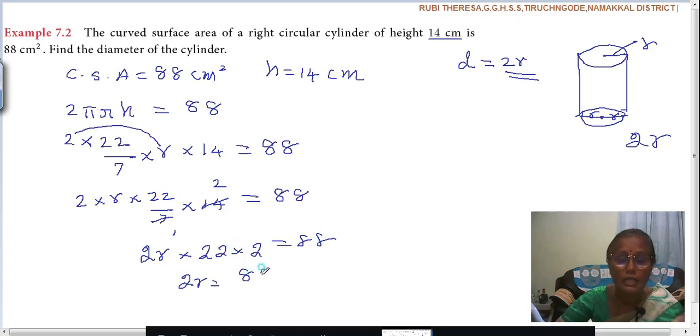You want to find out 2R. 2R equal to 88 divided by. No need to multiply it here. It is better to bring it to the down in the denominator because this is a multiplication in LHS. When you are bringing this to the RHS, how will you write? In the denominator. Reciprocal. 22 into 2 means what? Divided by 1, divided by 1. That means what? 1 by 22, then 1 by 2. But it is not necessary to write it here.